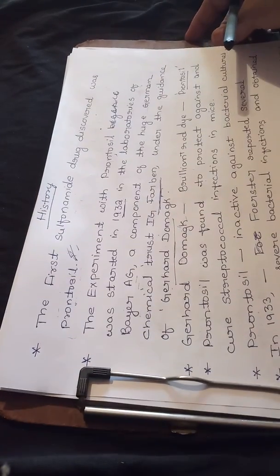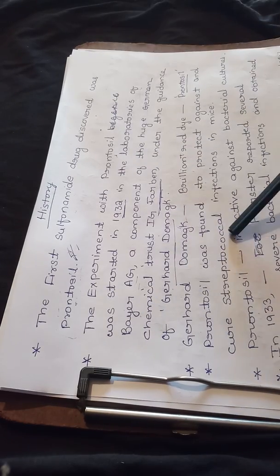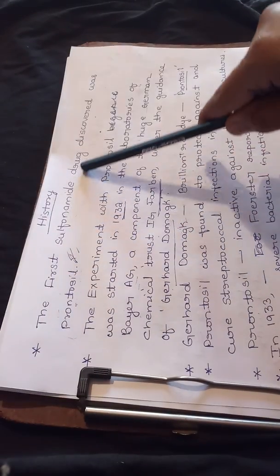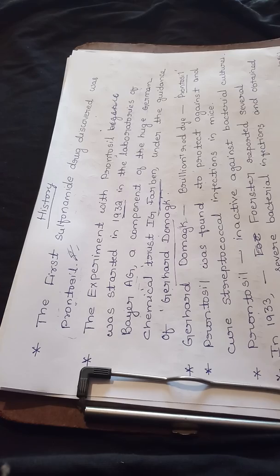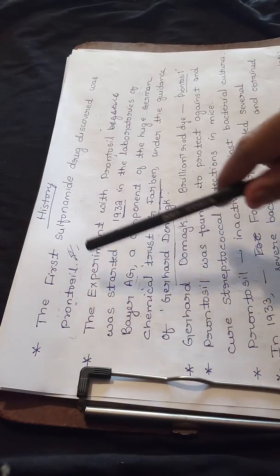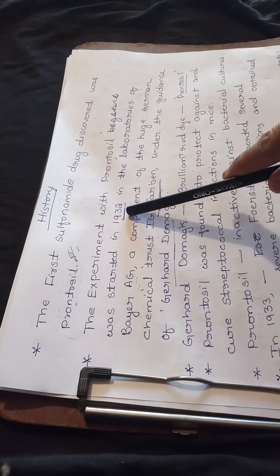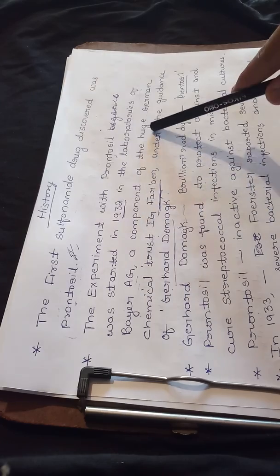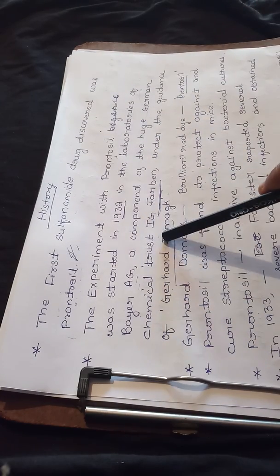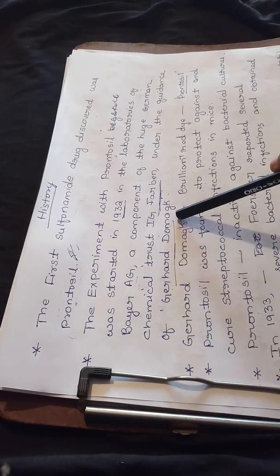Let us concentrate on the history of sulfonamides. The first sulfonamide drug discovered was prontosil. The experiment with prontosil was started in 1932 in the laboratories of Bayer AG.